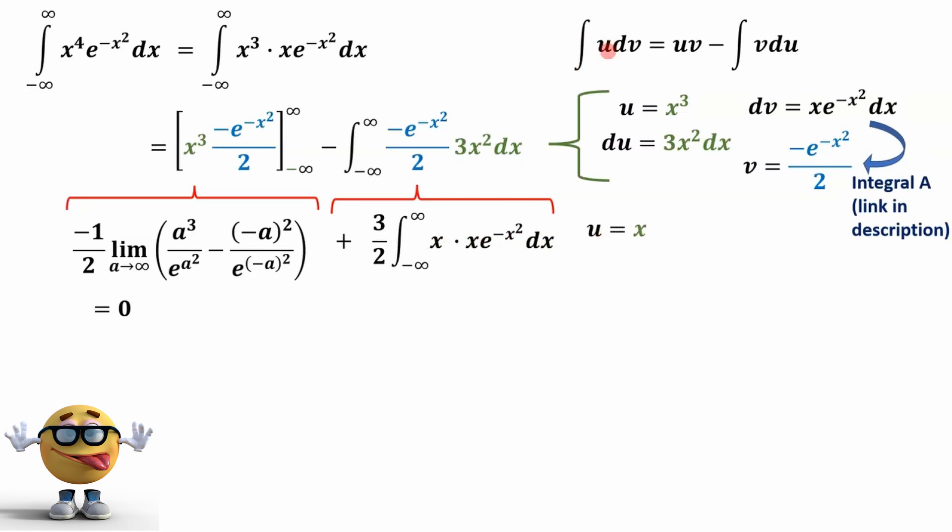So we'll get u equal to x. This is our u here equal to x, so du equals dx. Nothing changed. Now dv is equal to everything else. In this case, it is the same as what we did before: x times e to the negative x squared. We did that here, it's the same thing here. So the integral of this is also the same, it's the same negative e to the negative x squared over 2.